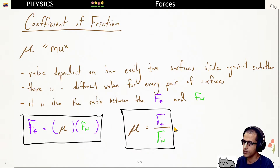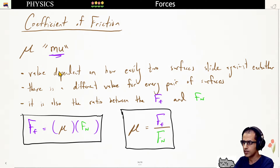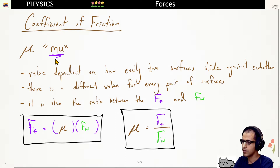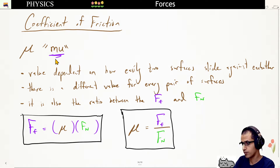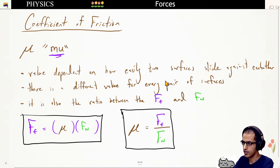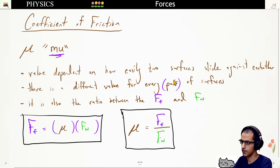The coefficient of friction is represented by the Greek letter mu. It is a value that tells you how easily the two surfaces will slide together. Typically the value is between zero and one, though there are coefficients of friction higher than one — for materials such as rubber on rubber, for example, the force of friction can be higher than the normal force. A coefficient of friction is not given for a single surface; it's always for a pair of surfaces.